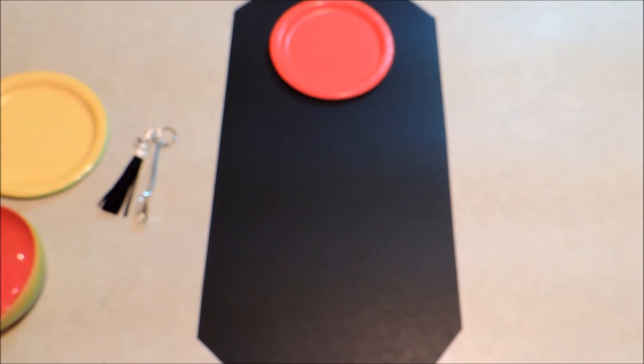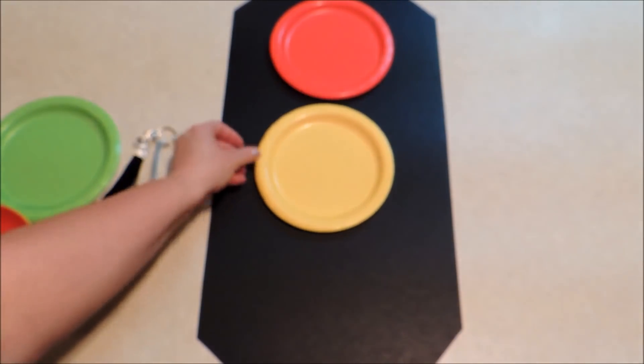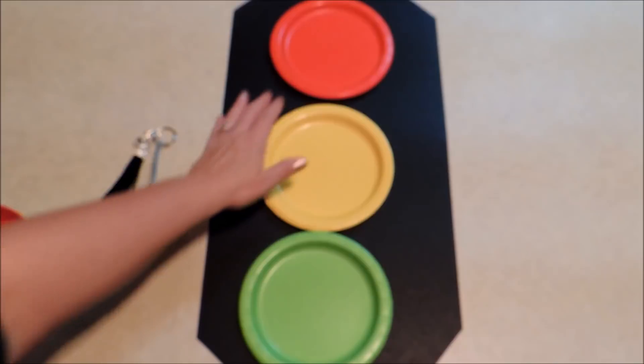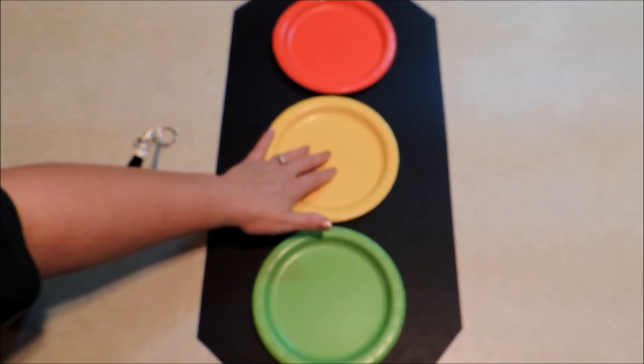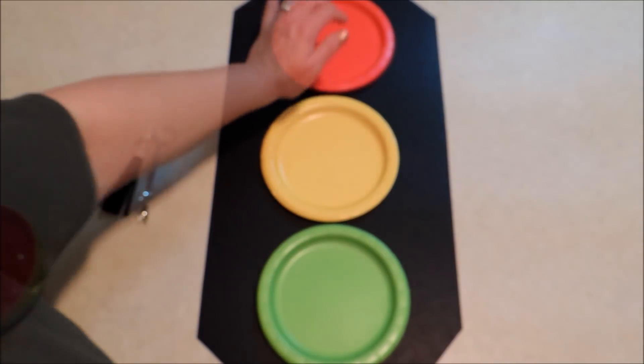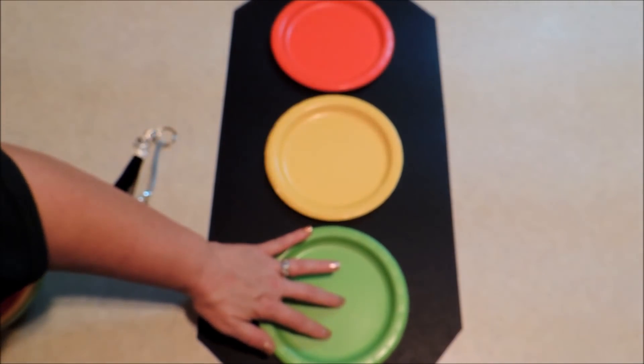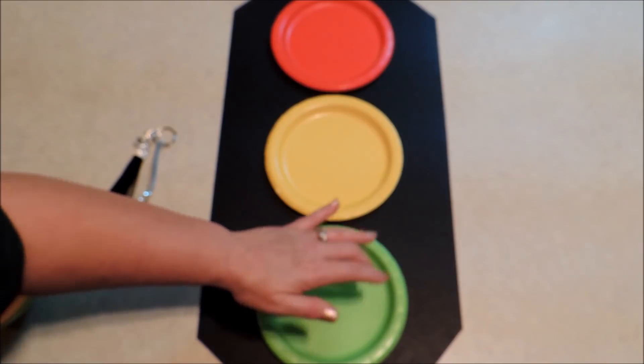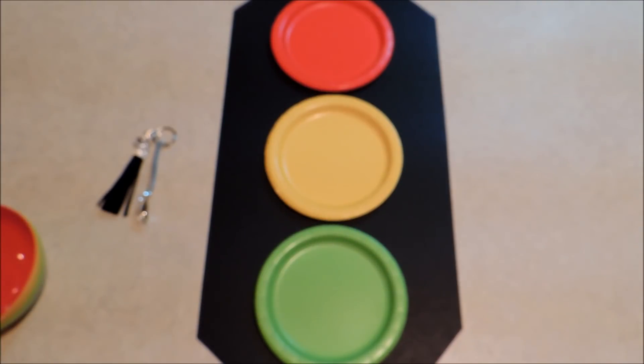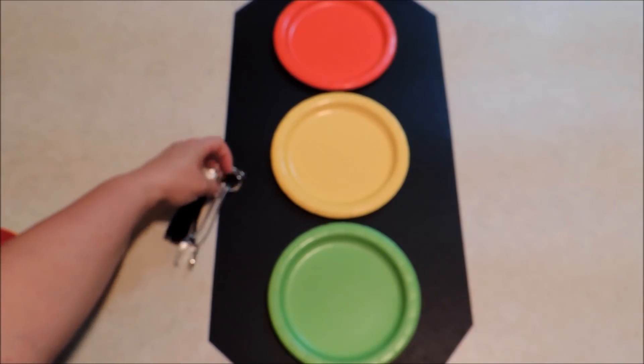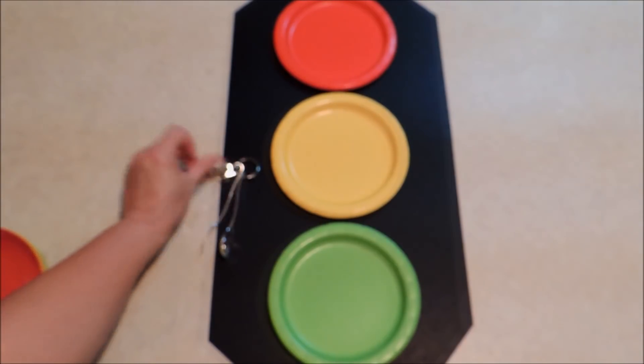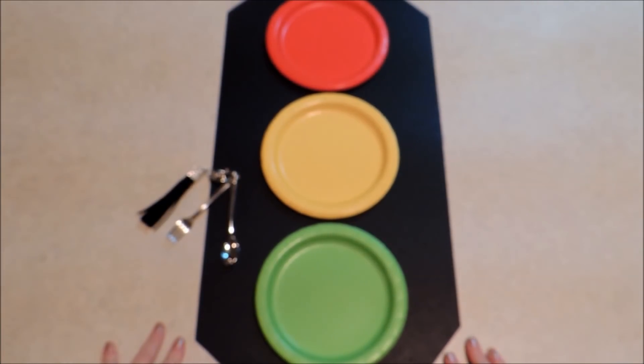After I got that cut and fixed on the edges, that was all I needed to do. Then I can lay out my plates. There is plenty of room for all three: red, yellow, and green. You can even have enough room to space them out some so that you've got a little bit of space in between those. Then you just place your keys to the side.